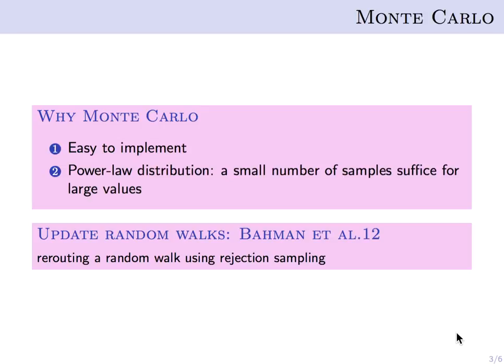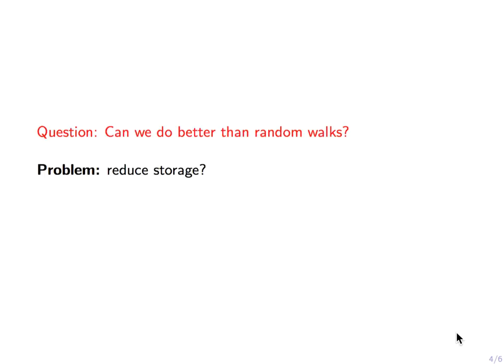Besides, it is not very hard to update random walks as well using the idea of rejection sampling. So the question is, can we somehow do better than random walks? And in particular, a concrete problem is, can we reduce the amount of storage that is used to keep the random walks?